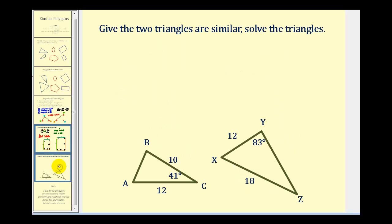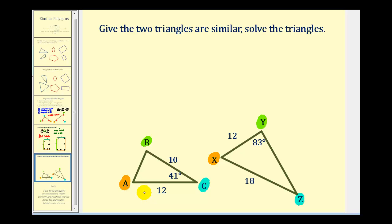Let's take a look at one more example. We're given that these two triangles are similar and we want to solve the triangles — find the length of all sides and the measure of all angles. Let's start by identifying the corresponding angles. Angle C is the smallest angle in the triangle, so angle C must correspond to angle Z. Angle B is the angle opposite the longest side, so angle B corresponds to angle Y. That leaves angle A corresponding to angle X. Corresponding angles are congruent, so if angle Y is 83 degrees, so is angle B. And if angle C is 41 degrees, angle Z must also be 41 degrees.